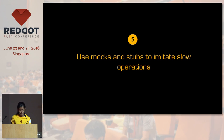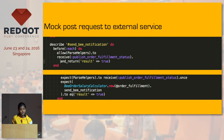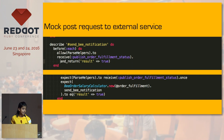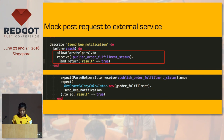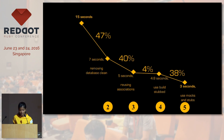Step five: use mocks and stubs to imitate slow operations. In the test cases, there was a POST request being sent to the Parse application we use to send notifications to our bees. This is unnecessary because it's slow, and if Parse is down, our test cases fail. It's better in such situations to not do integration tests and instead use mocks — you imitate what the method should return and return that instead. When I do that, it brings the time down to three seconds.